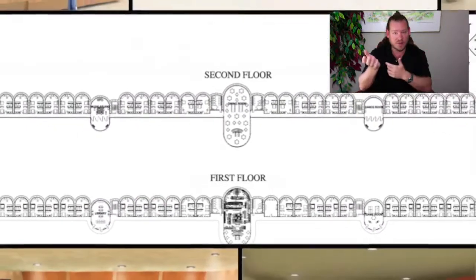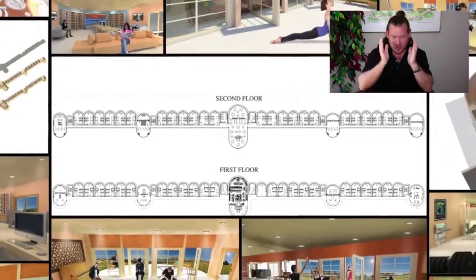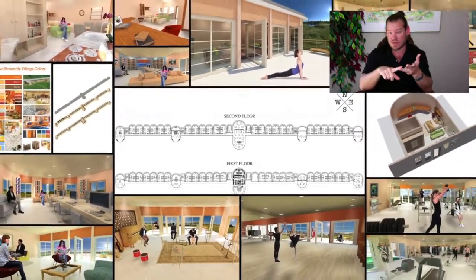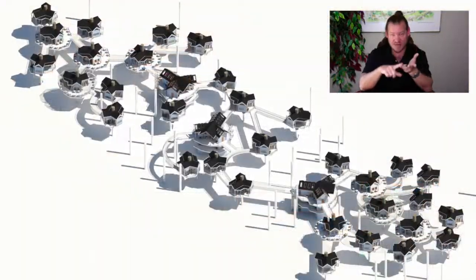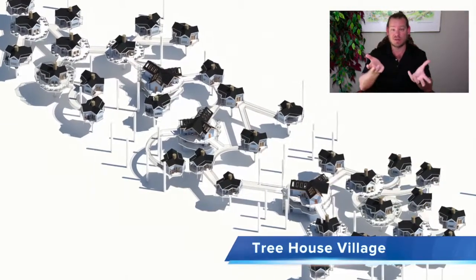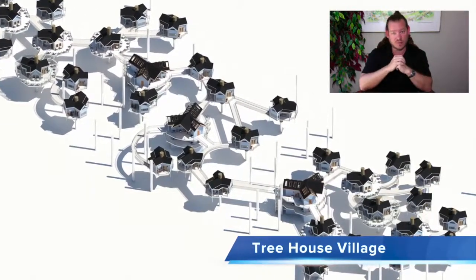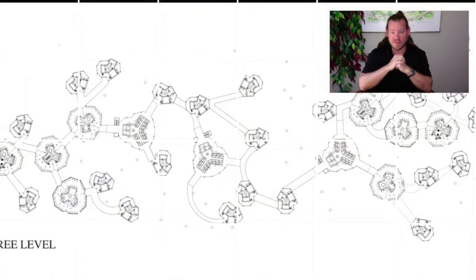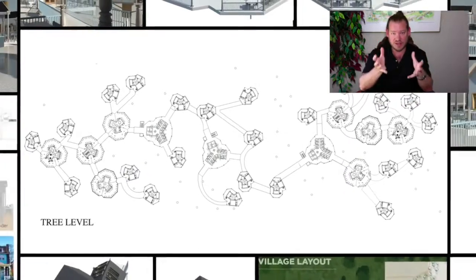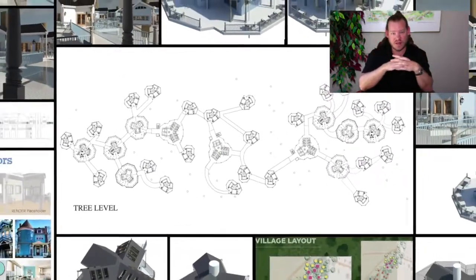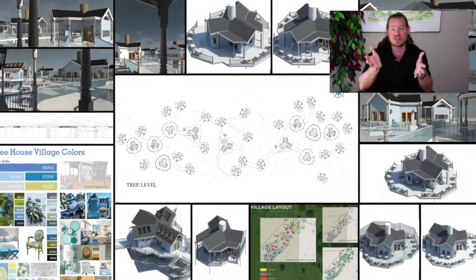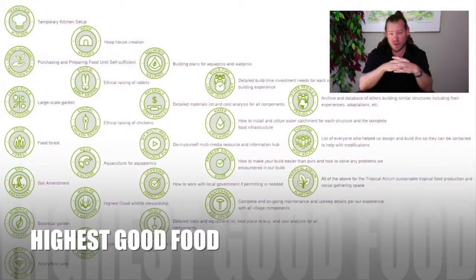We just need to clear away the barriers, demystify the process, streamline, open source, and free share. If we can make it easy enough, affordable enough, and demonstrate teacher demonstration communities, villages, cities, and hubs as an attractive enough way of living, the idea will spread on its own. This is how One Community is creating world change — transforming our planet to a sustainable one within 30 years, with a highest good culture working together to meet the needs of all people everywhere.